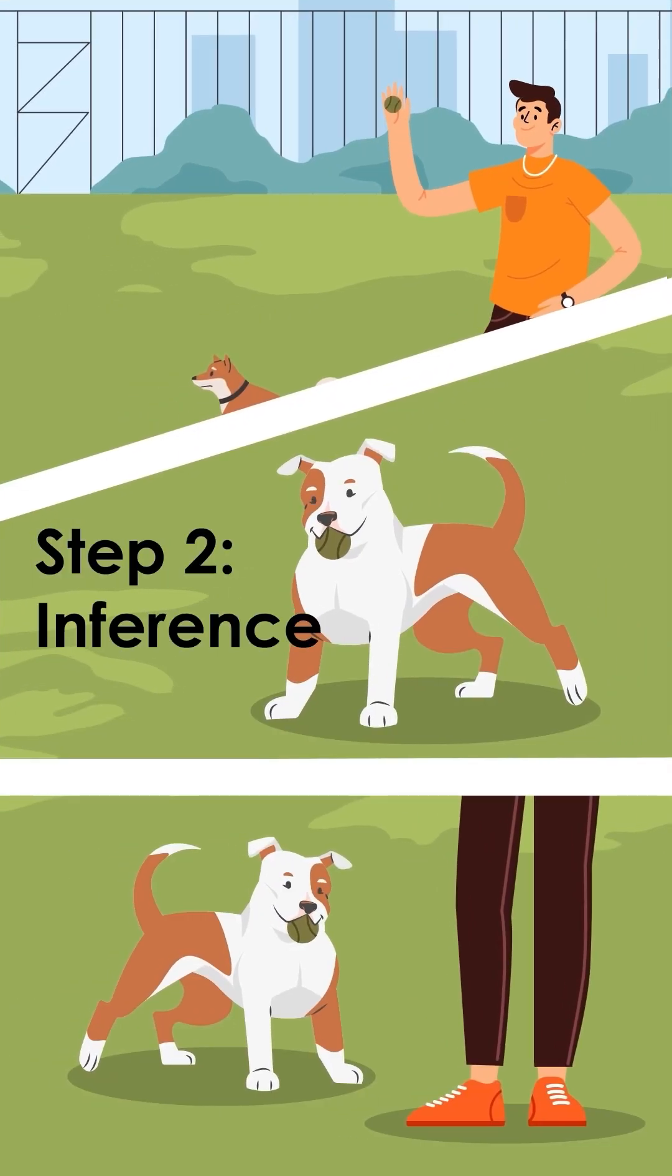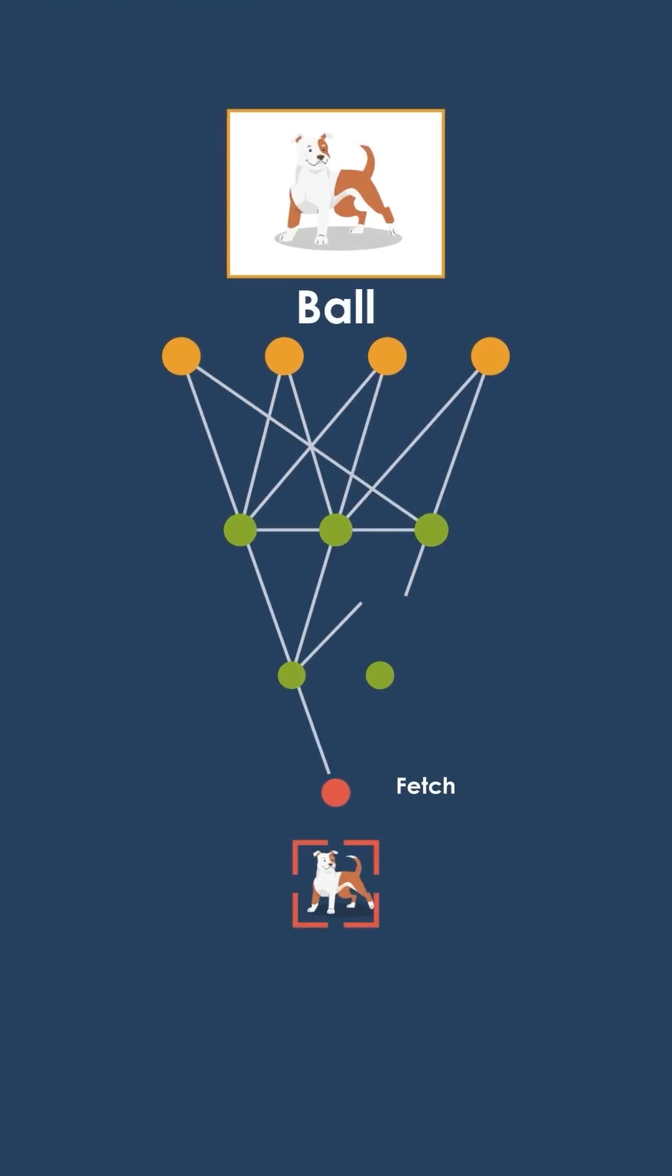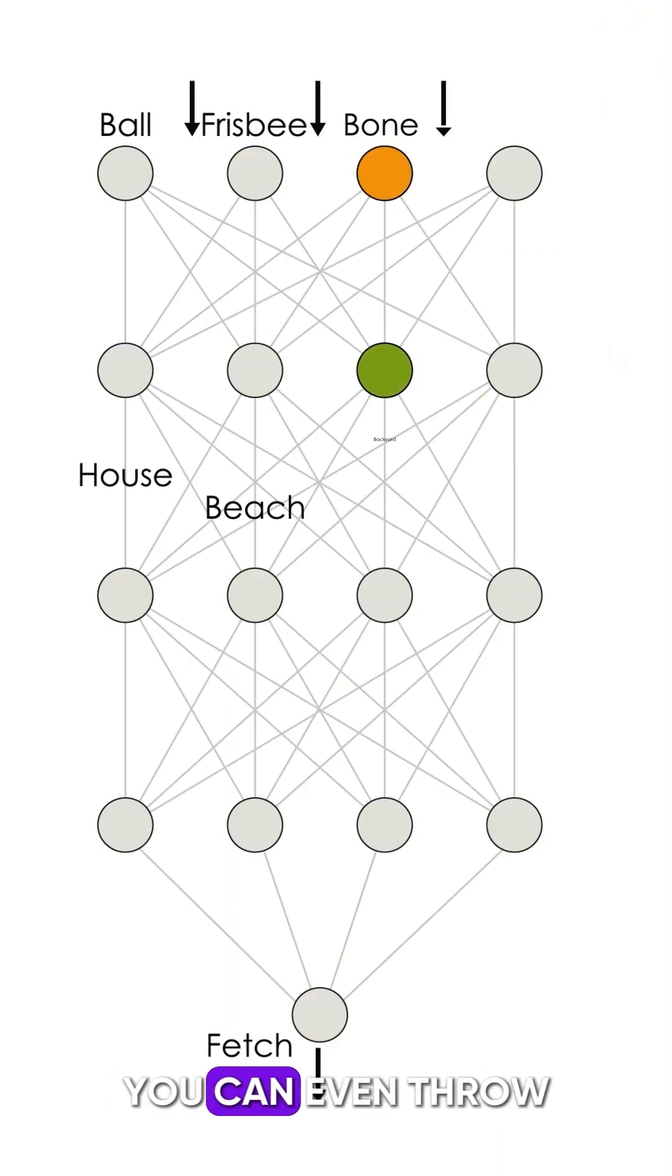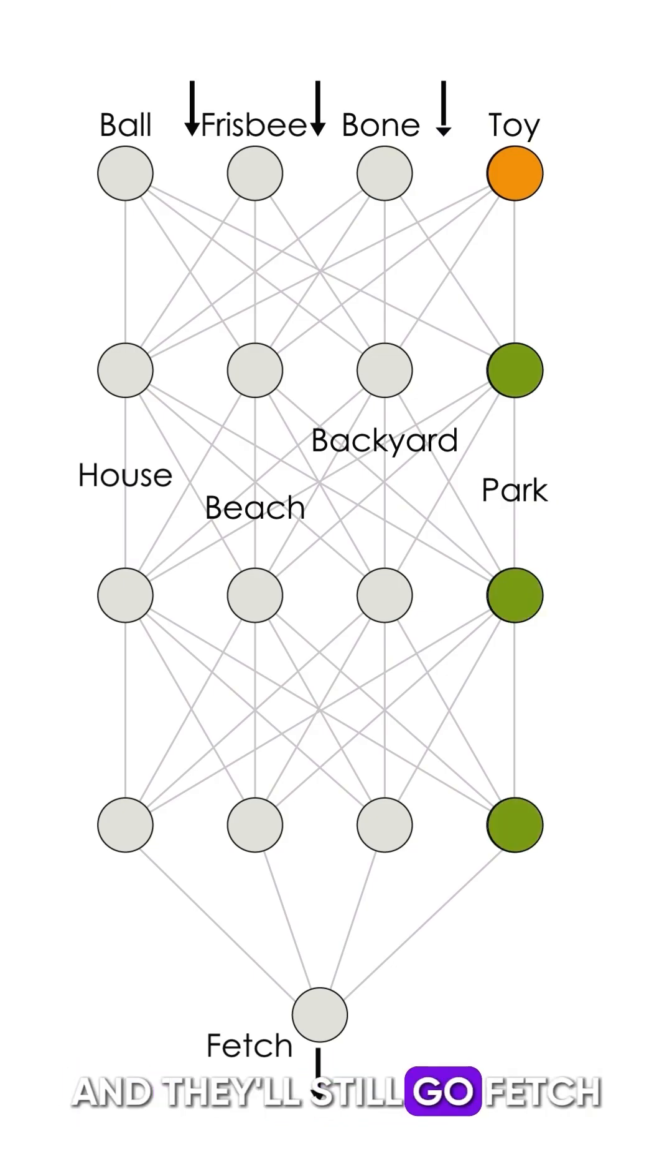The second part is called inference. Once a dog learns the trick, you just throw the ball and they simply fetch. No extra teaching was needed. Now the dog doesn't need you to guide every throw. You can even throw any object and they'll still go fetch.